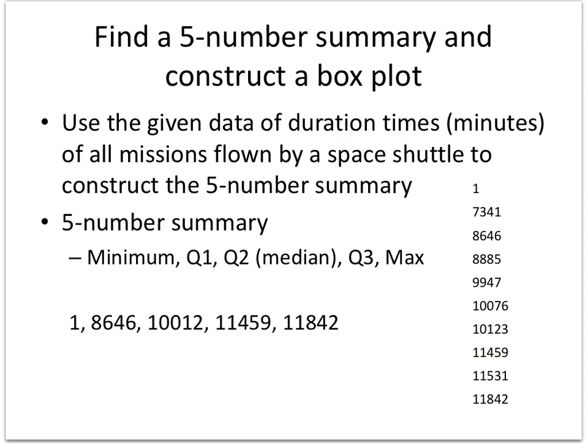And so that gives me my five-number summary, which gives me my minimum, my quartile 1, my 50th percentile or quartile 2, the 75th percentile or quartile 3, and then the max.